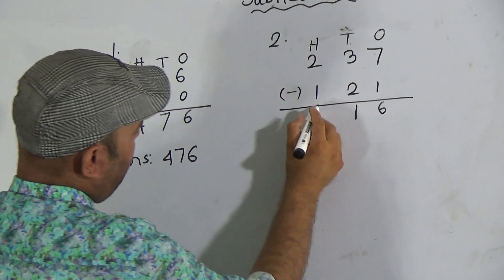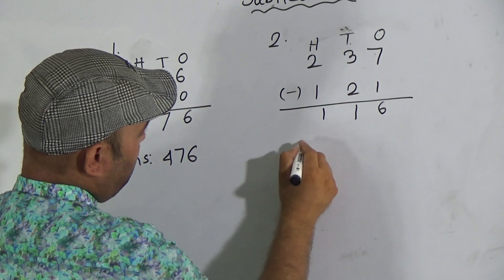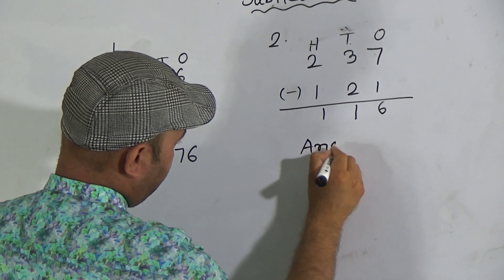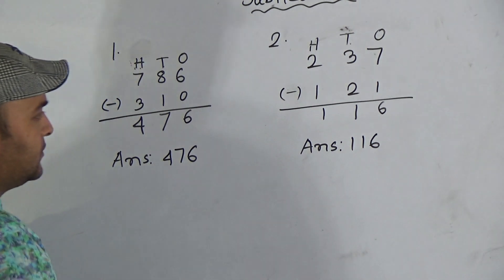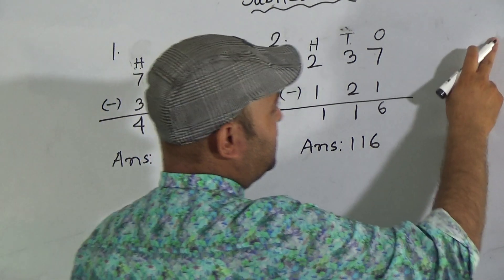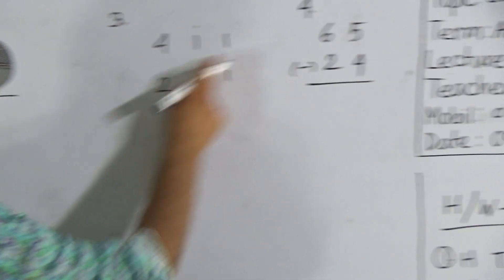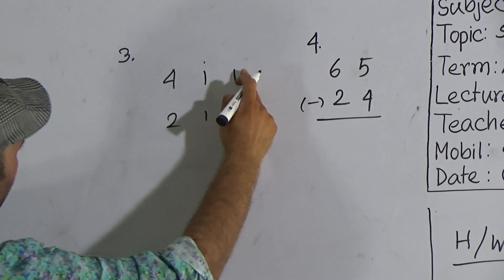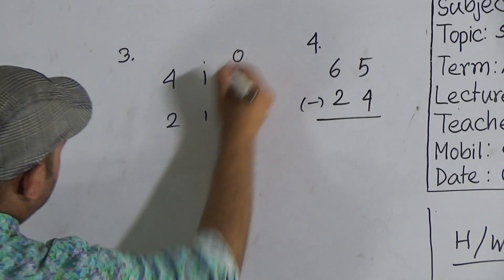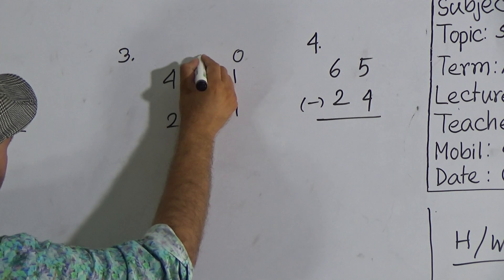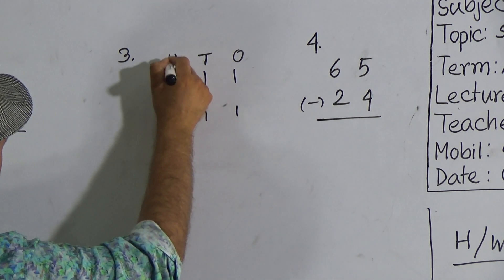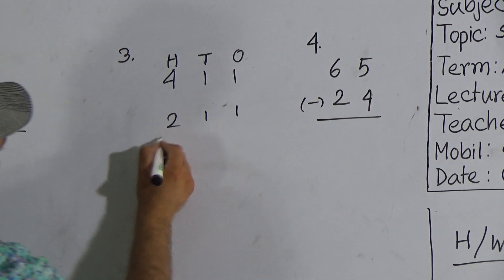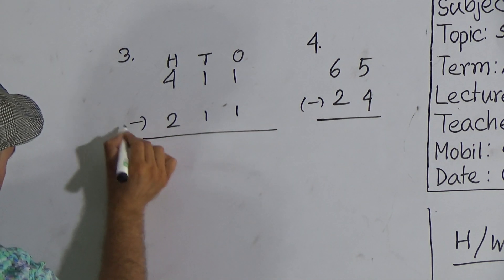Now here is question number 3: 411 and 211. Look here, 1 and 1 are ones place, again 1 and 1 are tens place, and finally 4 and 2 are hundreds place digits. Now draw a line and put a minus sign here.